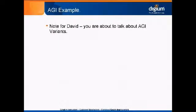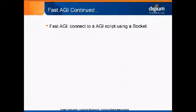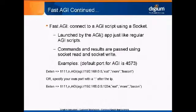Now let's talk about AGI variants. Fast AGI is a way to connect to an AGI script using a socket. That's really cool because you don't have to have the AGI script process running on the same server as the Asterisk box — you can connect to it remotely. It's launched within the AGI app just like a regular AGI script. Commands and results are passed along socket read and write. An example would be: AGI://your_IP and then you pass three arguments. Instead of command-line arguments, they're passed in on those environment variables.